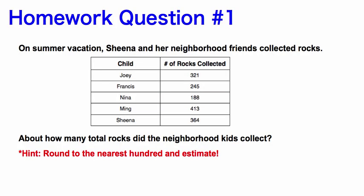Here's homework question one. On summer vacation, Sheena and her neighborhood friends collected rocks. Round to the nearest hundred and tell about how many rocks did the neighborhood kids collect in all. Remember: look at the last two numbers — if it's above 50, climb the vine and round up to the next hundred. If it's below 50, shut the door and round down to the nearest hundred.